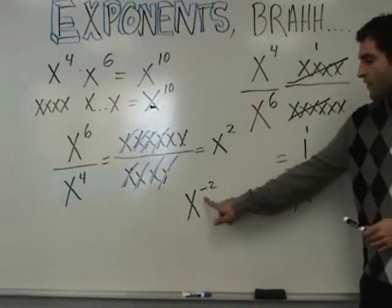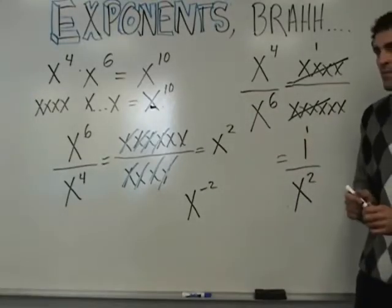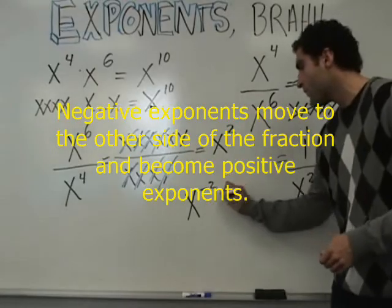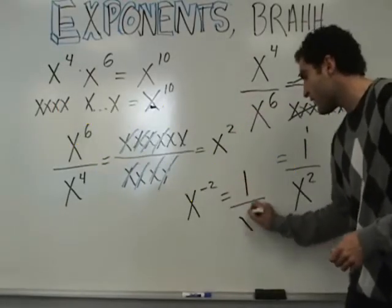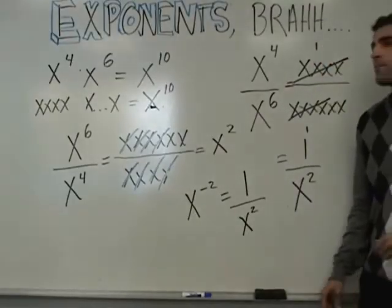The rule is, when you have a negative exponent, you move it to the other side of the fraction and make it a positive exponent. Again, negative exponents move to the other side of the fraction and they become a positive exponent. All right, now we're going to jump into this hardcore.